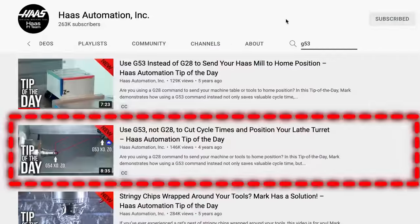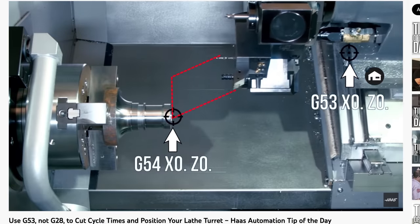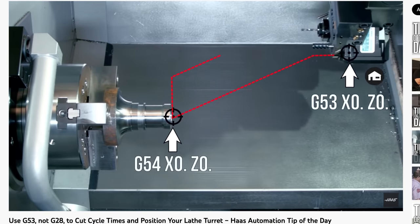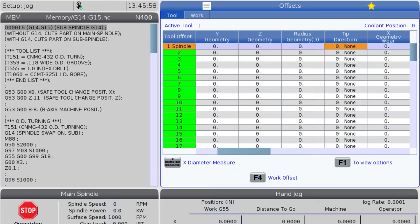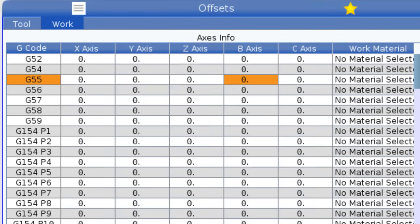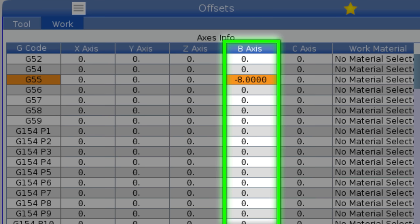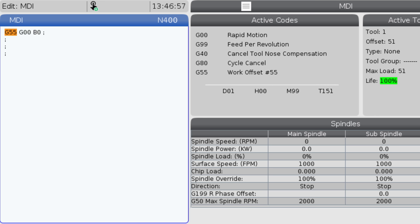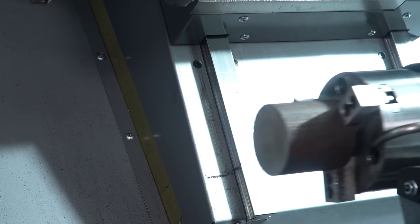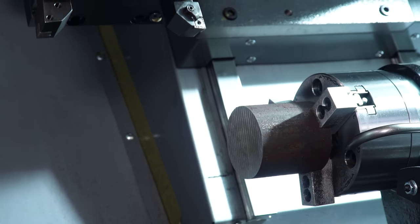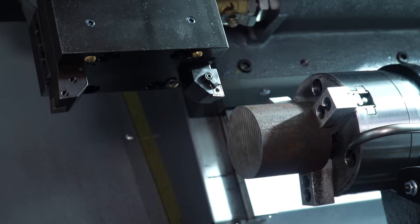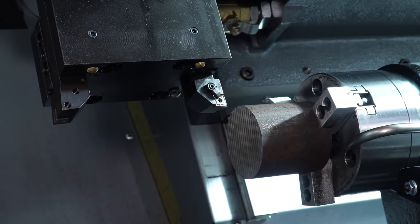If G53 machine positioning is confusing, we made a video on G53 and we will link to it. We could have added this minus eight inches to a work offset. If we're using G55, we could add minus eight inches to our B-axis column. And then when we command G55, G zero, B zero, it'll pull that sub-spindle into the exact same position. But again, we're going to use a G53 method in this video, just because I like it.